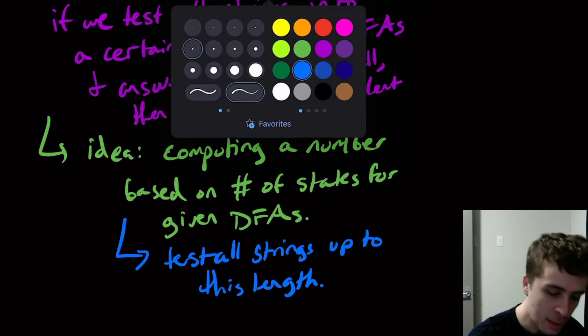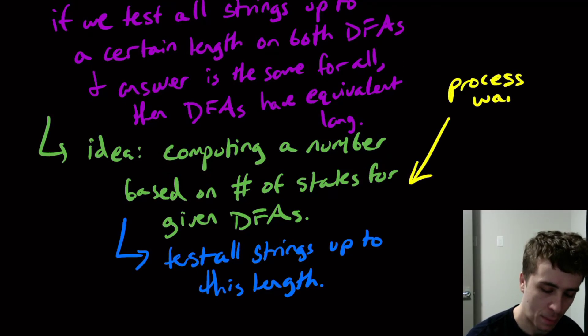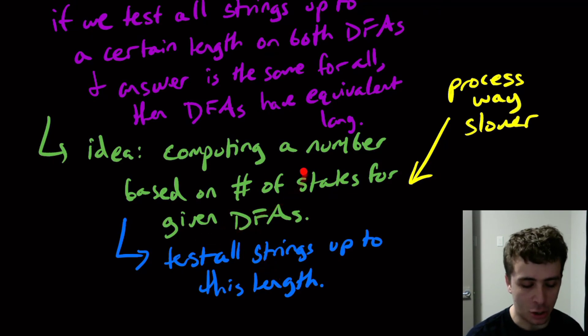The only crummy thing about this is that the process is way slower. Just to give you an example, if we have to test all strings up to length n, for example, and let's say that the alphabet was zeros and ones, then the number of strings up to a certain length would be exponential in n, 2 to the n in some way.